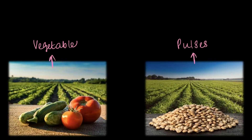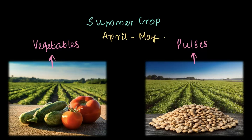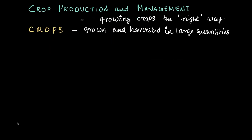There are also some pulses and vegetables, like tomatoes, that are grown during the summer season in certain parts of the country. These are classified as summer crops. In India, summer crops are grown during April and May, so the pulses and vegetables grown during April to May are called summer crops.